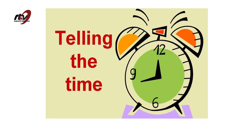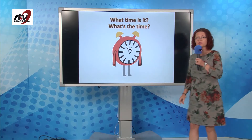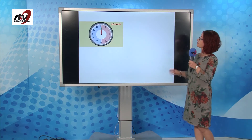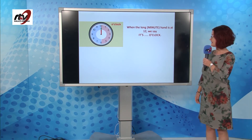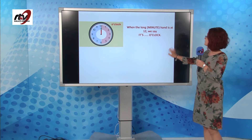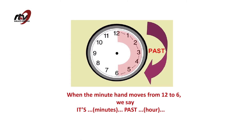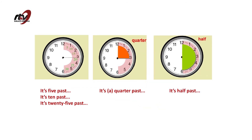The next topic we're going to talk about is the time. What's the time? It's time to tell the time! The question we usually ask is 'What time is it?' or 'What's the time?' When the long or minute hand is at twelve, we always say it's o'clock. Like in this case, it's one o'clock. When the minute hand moves from twelve to six, we say it's the number of minutes past the hour — five past, ten past, twenty-five past, quarter past, or half past.